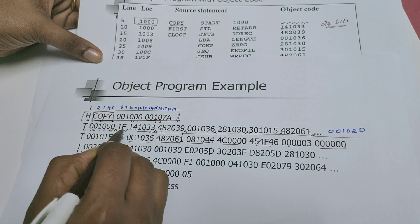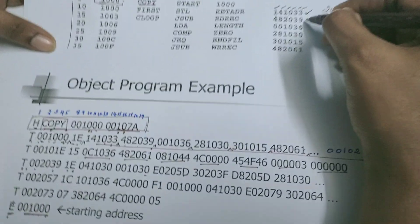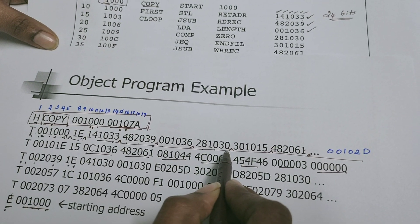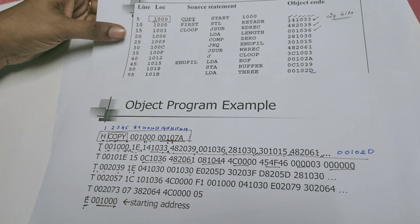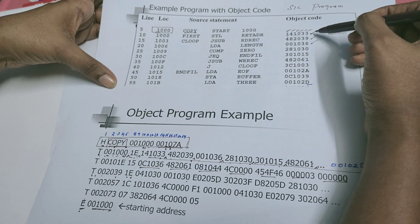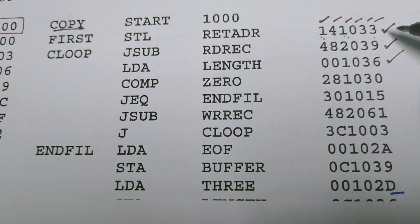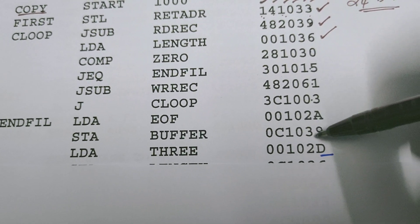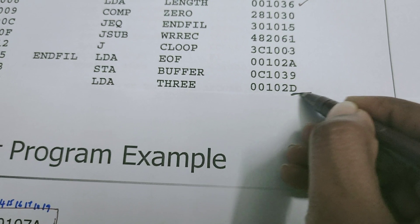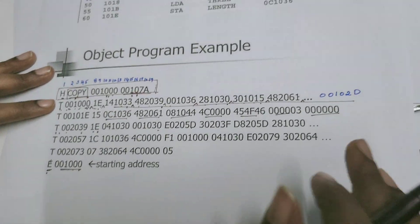Now let us see how the text record is written. We start the text record with the letter T, and 1000 is the starting address — written across 6 columns. The object codes are written into the text record one by one: 141033, 482039, 001036, 281030, 301015, and so on. Since each object code is 3 bytes and a maximum of 30 bytes can be stored, we can fit 10 object codes per text record. Counting the object codes, up to object code 00102D, one text record can be written. For the remaining object codes, we start writing the next text record.